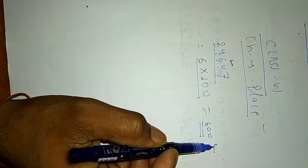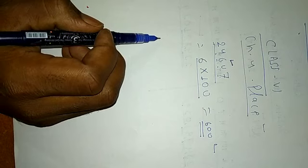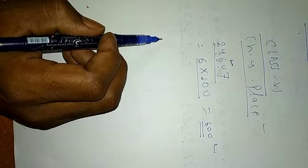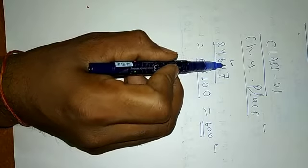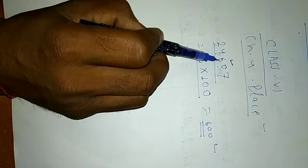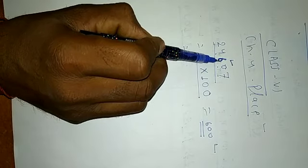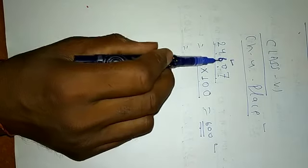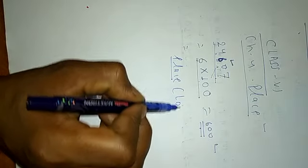The definition of place value: place value is the value of a non-zero digit according to the position of the digit. The position of 6 is 100. In other words, the place value of any digit is the product of the digit and its place — 6 into 100 equals 600. Place value is also called local value.